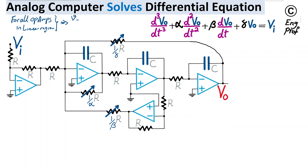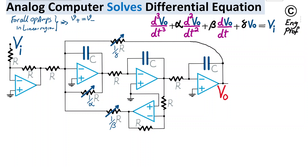The virtual short indicates that the voltage at the positive input terminal equals the voltage at the negative input terminal. Since the positive terminal for all op-amps is grounded, the negative terminal is also at 0 volts — effectively a virtual ground equal to zero. This is important because we'll use it in our analysis.